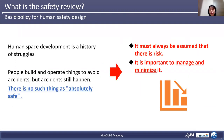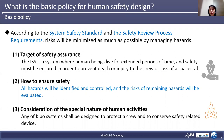Why do we need to conduct safety design? There have been many accidents in the history of human space development. In other words, human space development is the history of struggles. The developers and operators of the ISS system and payloads take care to make sure no accidents happen, but accidents still happen. There is no such thing as absolutely safe, so we must recognize that there is risk everywhere and it is crucial to manage and minimize it. Sufficient safety measures will be taken according to the basic rules based on the system safety standard and the safety review process requirements, and risks will be minimized as much as possible by managing hazards.